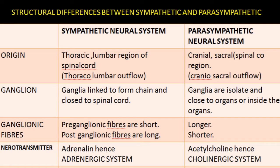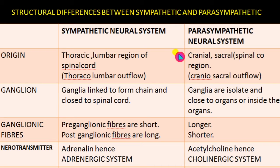In the parasympathetic neural system, the effect is inhibitory — it calms down the system and brings the excited body to a resting condition. The effect is local and limited because the post-ganglionic fibers are shorter. These are some of the differences between the sympathetic and parasympathetic neural systems.